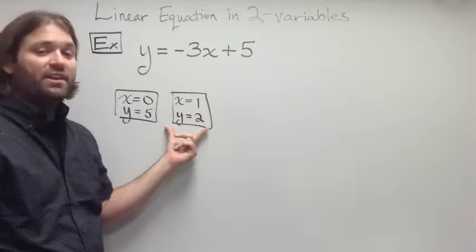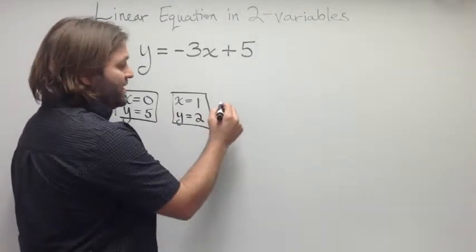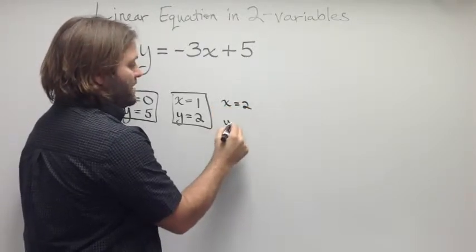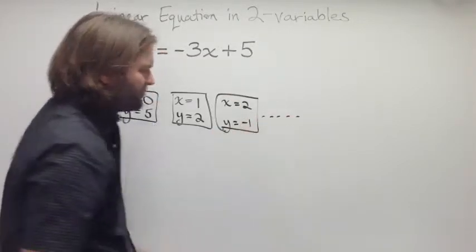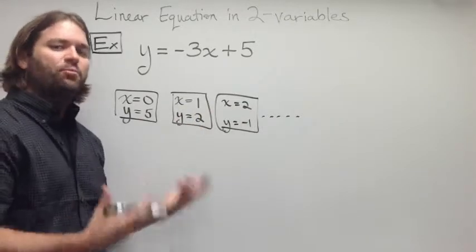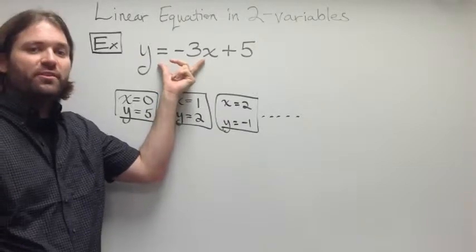And so, therefore, this is another solution. Well, as you can imagine, we could keep going on and on. If x was equal to 2, y would be equal to negative 1, and so on and so forth. So, clearly, this is not a very good way of expressing the solution to this equation, this linear equation in two variables.